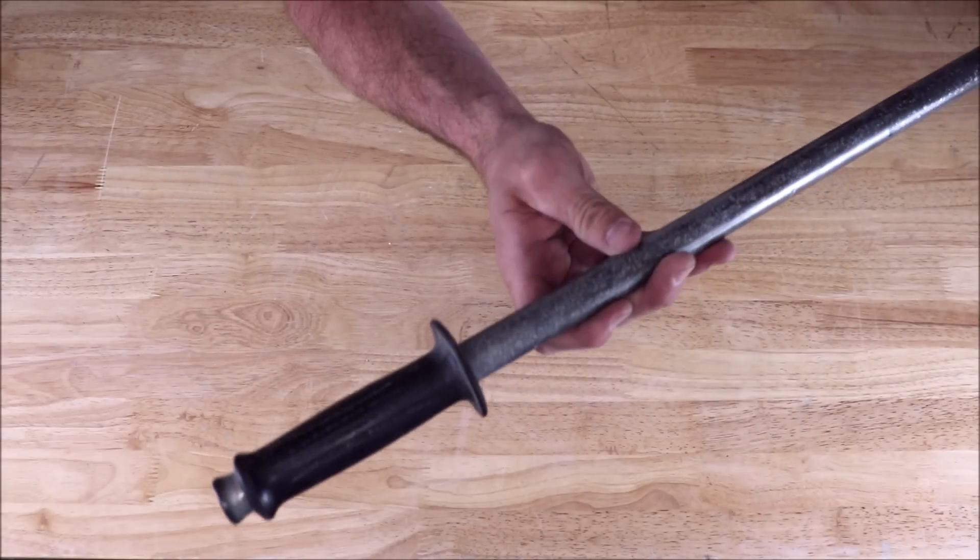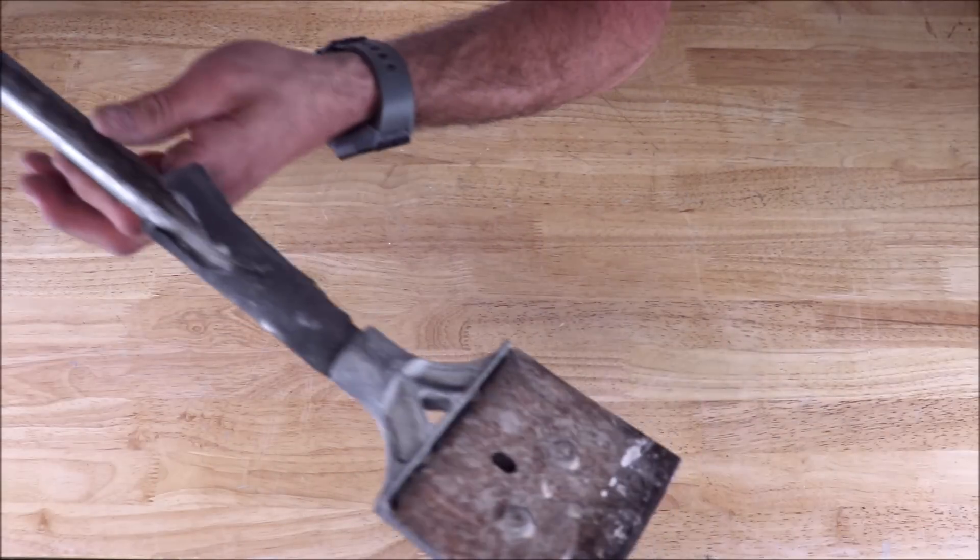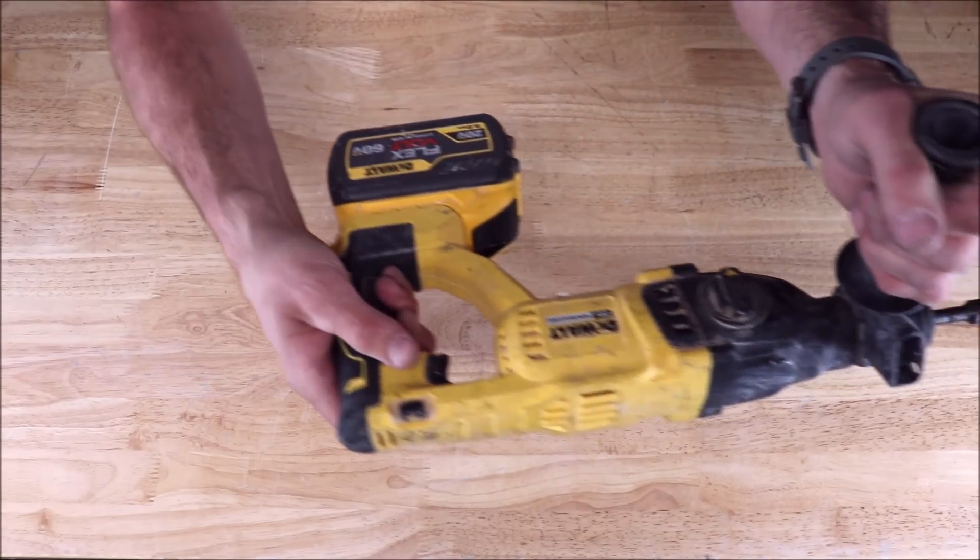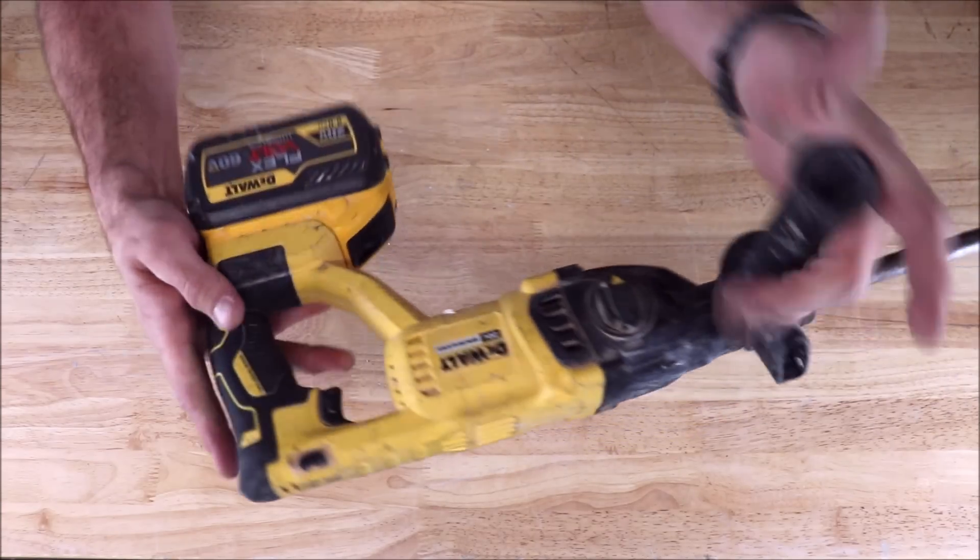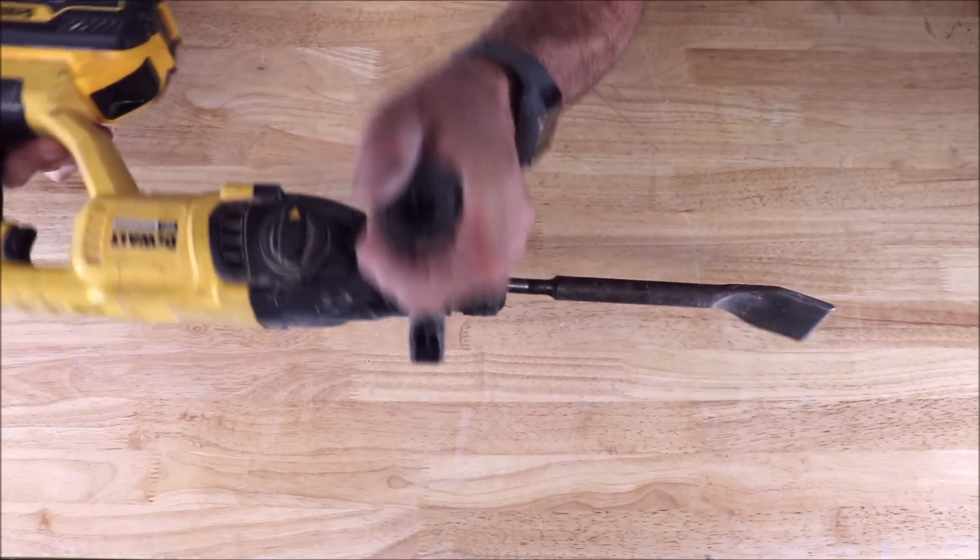You want to use a hand pull scraper, and removing thinset mortar, the best way to do that is using a rotohammer.